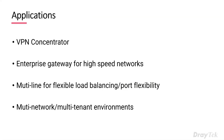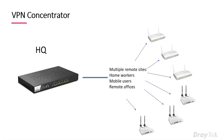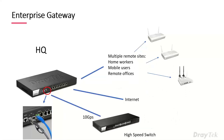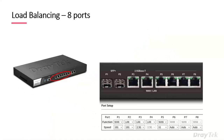There are different application scenarios where the 3910 is well suited. One is headquarters with multiple remote sites, home workers, mobile users, or remote offices connecting in. Another is as an enterprise gateway with good LAN switch connectivity and fast internet. Load balancing is also common — you could put three or four VDSL connections via Vigor 130 modems into the 3910 and get a combined faster connection, useful in areas unable to get fiber speeds.